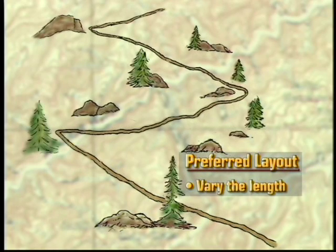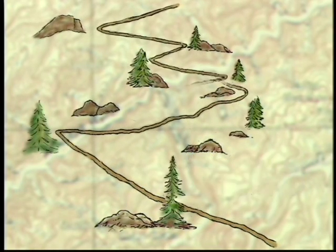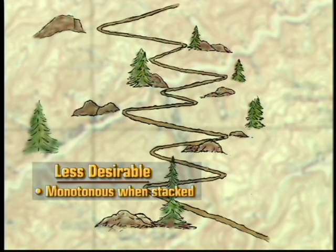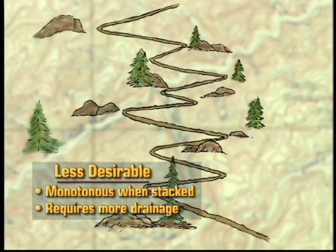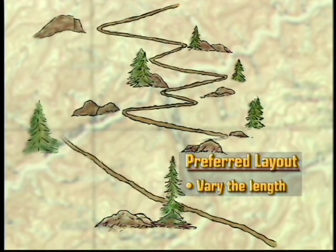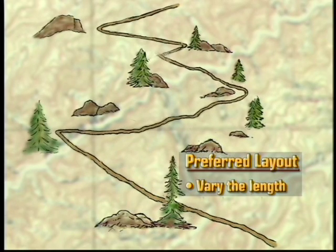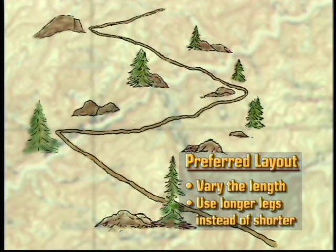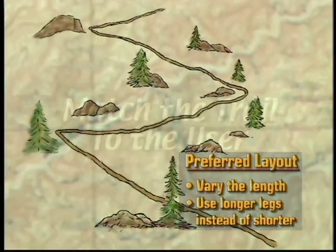Vary the length between switchbacks. Uniform switchbacks stacked up a hillside are monotonous, and they also require more control of the drainage between them. Try to fit your trail to the mountain, and as long as you can continue to gain elevation, keep the legs between switchbacks longer rather than shorter.